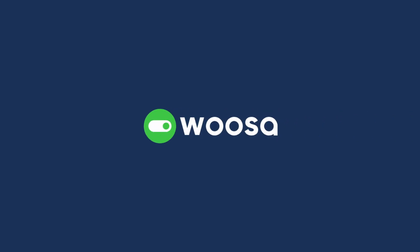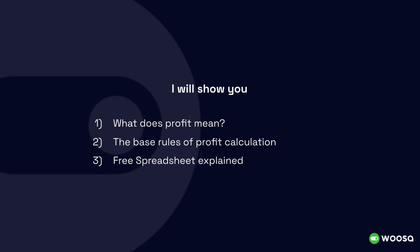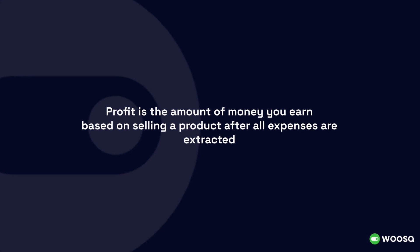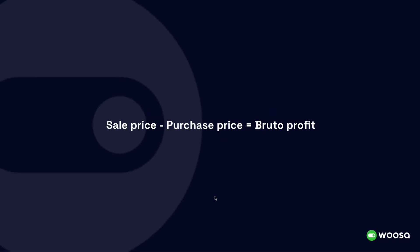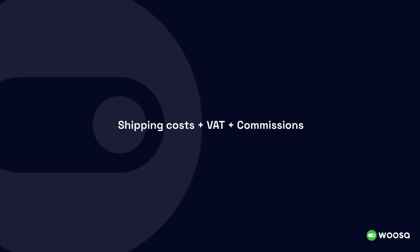In this video I will show you what profit means exactly, the base rules of profit calculation, and the free spreadsheet explained. Profit is the amount of money you can earn based on selling a product after all expenses are extracted. By default, profit is the sale price minus the purchase price — that is the bruto profit. Bruto means the sale price is probably including tax, the purchase price is also including tax, and in between there can be multiple expenses not taken into account. So bruto profit is not really the profit you are looking for.